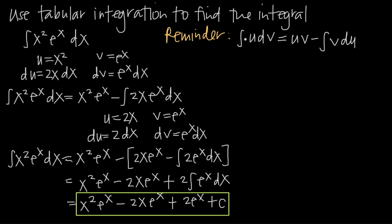Then we use the integration by parts formula, which tells us that the integral of u dv equals u times v minus the integral of v du. So our original integral becomes x squared times e to the x, minus the integral of v times du — which is e to the x times 2x dx inside our integral. But now we need to use integration by parts again to evaluate this remaining integral.